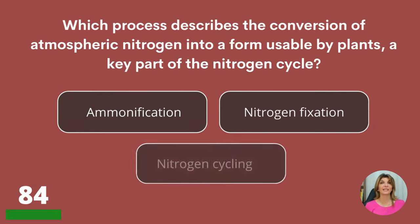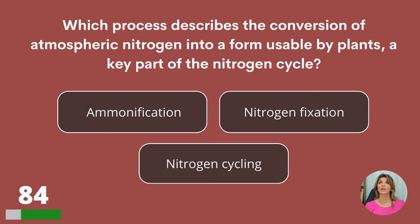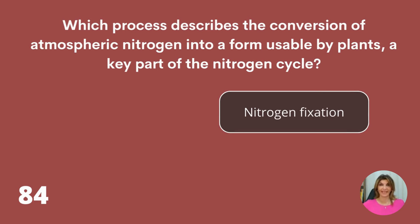Which process describes the conversion of atmospheric nitrogen into a form usable by plants, a key part of the nitrogen cycle? Ammonification, nitrogen fixation, or nitrogen cycling? Nitrogen fixation.